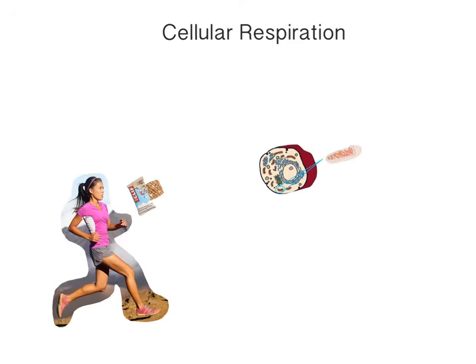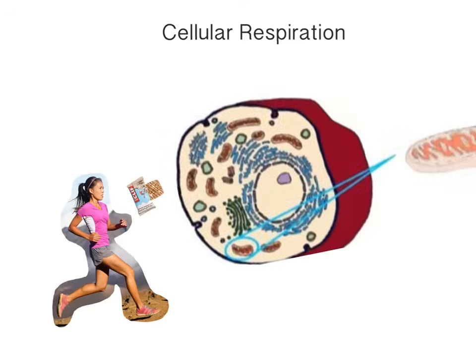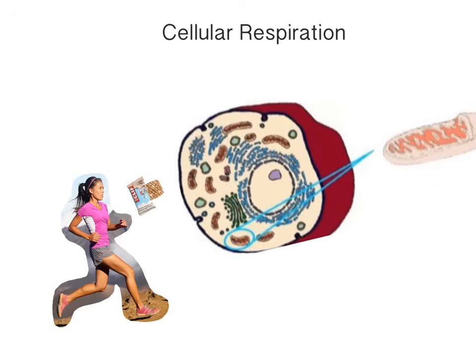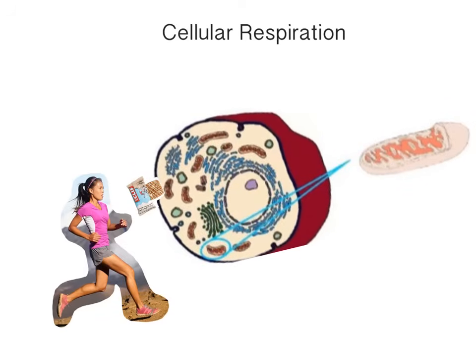Inside your cells, there's a structure called a mitochondria. The mitochondria is right here — it's really tiny normally, as you can see zoomed in. That mitochondria is responsible for making the energy that the runner needs.